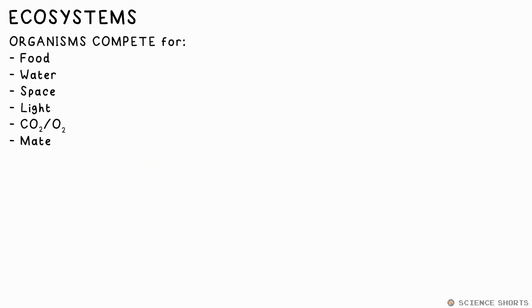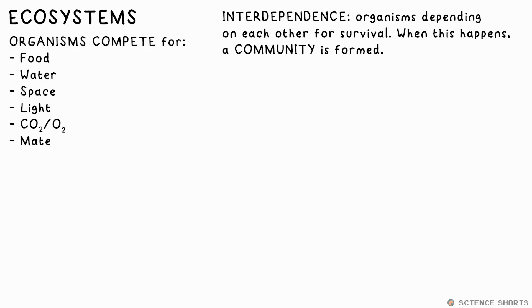Organisms generally compete for food, water, space and other things like CO2 and light for plants, shelter and mates for animals. Interdependence is the term given to the fact that organisms can rely on each other for these things, and they can form a community.